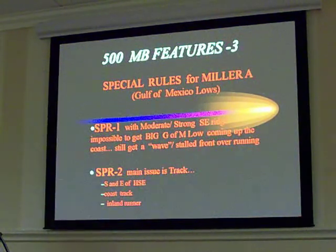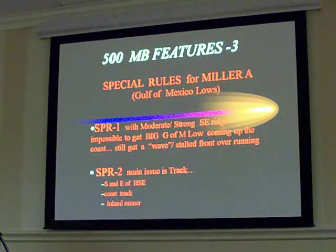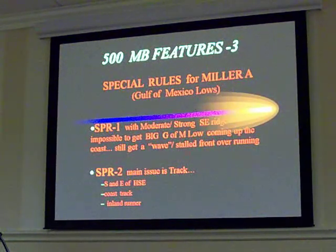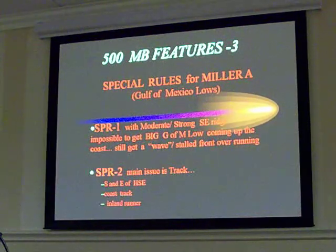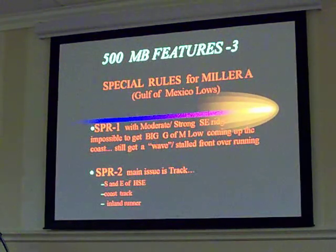Second rule for Miller-A: the main issue is the track. That is the main issue with Miller-A systems — whether the track is southeast of Hatteras, whether it's a coastal track or goes inland. Those are your main concerns. That's what you're looking for with those types of systems.